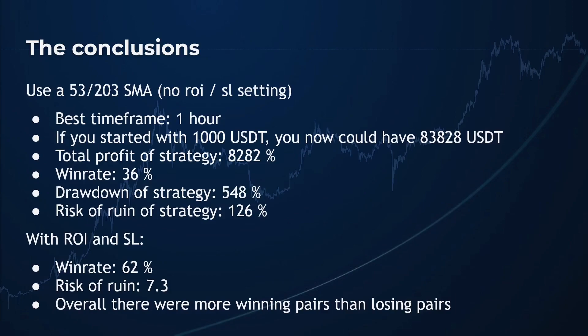So again, this is a choice between nice gains and a better win rate with low risk. The conclusions of my analysis are: the best time frame for the Golden Cross Death Cross strategy is the 1-hour time frame. Adjusting the SMAs to 53 and 201 improved performance by 8%, and with the 53/203 SMA pair it increased by 20%, without much additional risk. So I will use the 53/203 SMA combination for further comparisons. If you started with a thousand dollars a couple of years ago with these indicators, you could now potentially have slightly under 84 thousand dollars — a profit of more than 8200%. However, you risk a drawdown from the highest profit point of around 548% and a risk of ruin of 126%. The point where drawdown starts is dependent on market circumstances and is very unpredictable, so you should be very aware of this when trading with a bot.